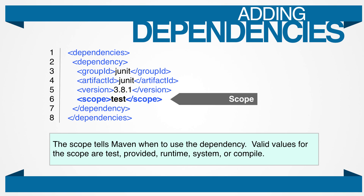If you look closer at the JUnit Maven coordinates, you will notice it also includes a new element that we haven't talked about yet — scope. Scope tells Maven when it should include the dependency in the class path. The default is compile, but there are four other possibilities: provided, runtime, test, and system.